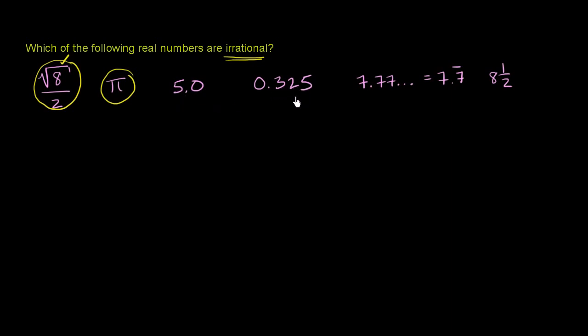0.325. Well, this is the same thing as 325 over 1,000. So I can clearly represent it as a ratio of integers. So this is rational, just as I could represent 5.0 as 5 over 1. Both of these are rational. They are not irrational.